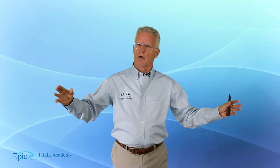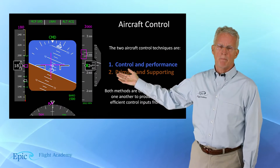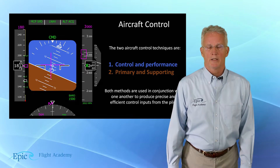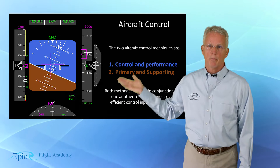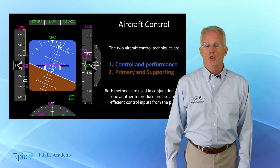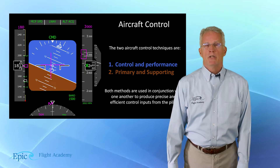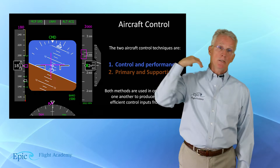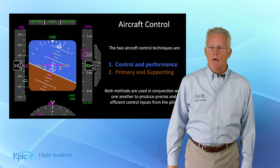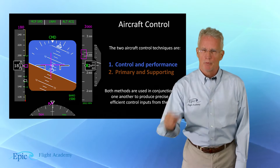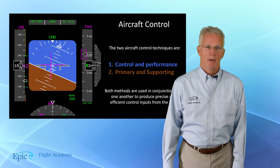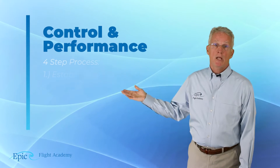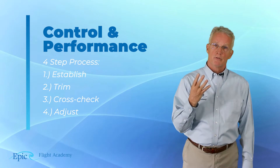So what about aircraft control? You can see on our graphic right here — it looks like I'm in an airplane in a climbing left turn. There are two control techniques to control the aircraft. Number one is called control and performance. Number two is called primary and supporting. It's a trick question to ask which one's better or worse, because the answer is both. Both methods are used in conjunction with one another to produce precise and efficient control inputs from the pilot. As we talk about aircraft control, let's start with control performance. The control performance method utilizes a four-step process.